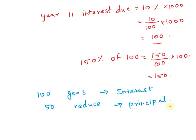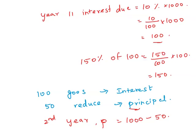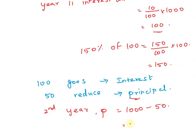For the second year, the principal amount P equals 1000 minus 50, because in the first year we reduced the principal by 50, which equals 950.